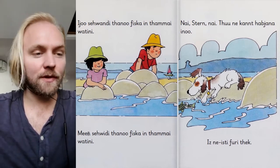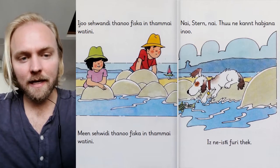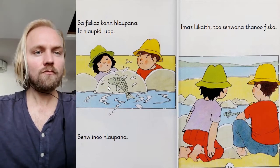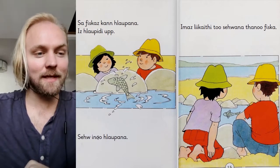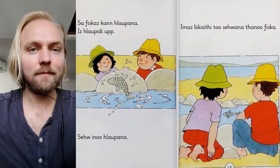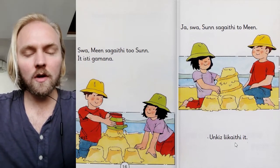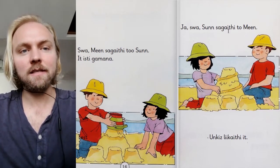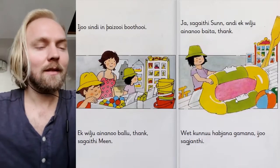Moon sees the fish in the water. 'No, star, no — you cannot have him.' The fish can leap, he leaps up. They like to see the fish. 'Swap' means 'thusly' or 'like this.' 'Like this,' moon says the sun — 'it is fun.' 'Yeah, like this,' sun says to moon. 'We like it' — 'on kiss' is 'we,' 'on kiss' is 'we two.'